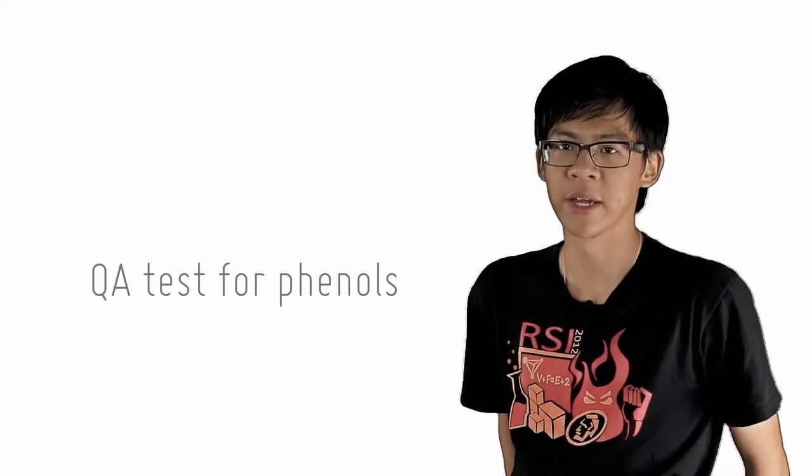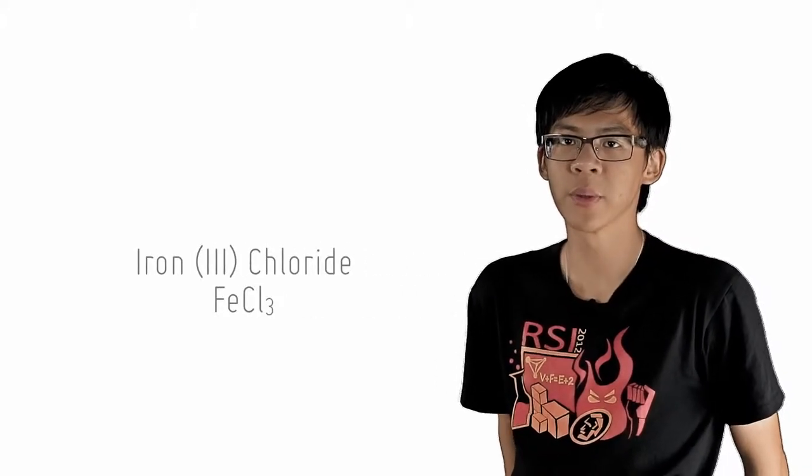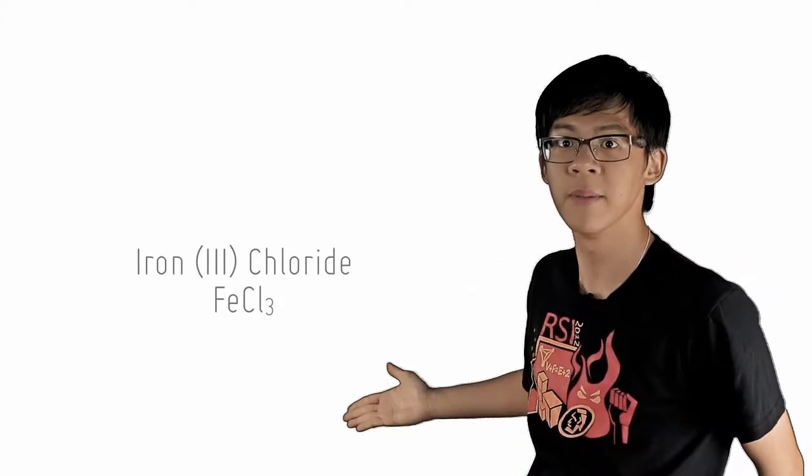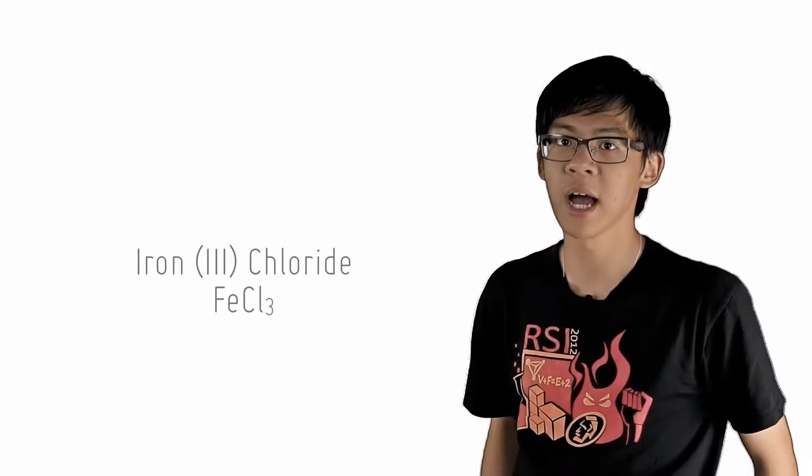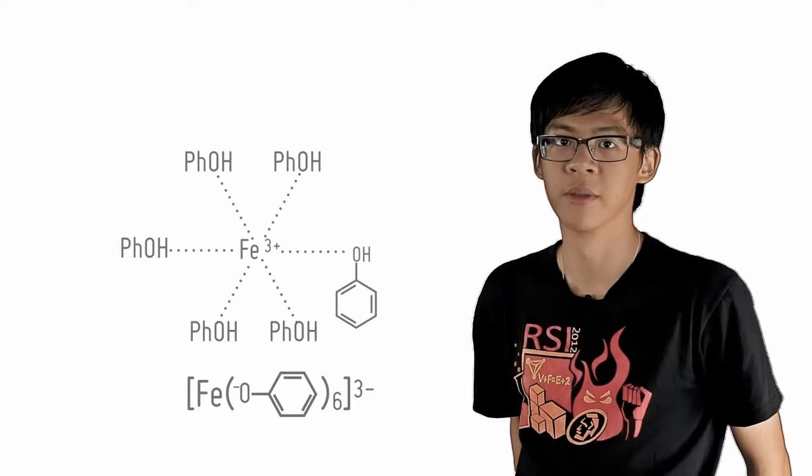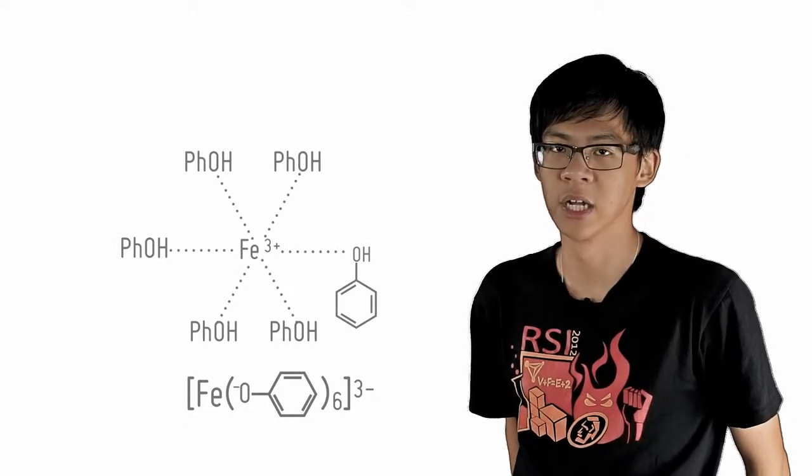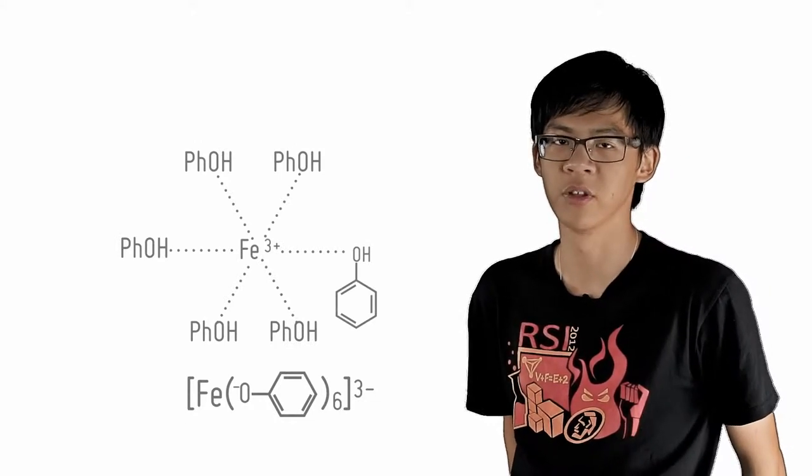The distinguishing reagent is aqueous neutral iron 3 chloride FeCl3. Phenols will react with the Fe3+ cations to form the resulting violet complex shown here, where 6 phenoxide ions are complexed to the Fe3+ cation. The presence of violet coloration in the test tube indicates that there is phenol present.